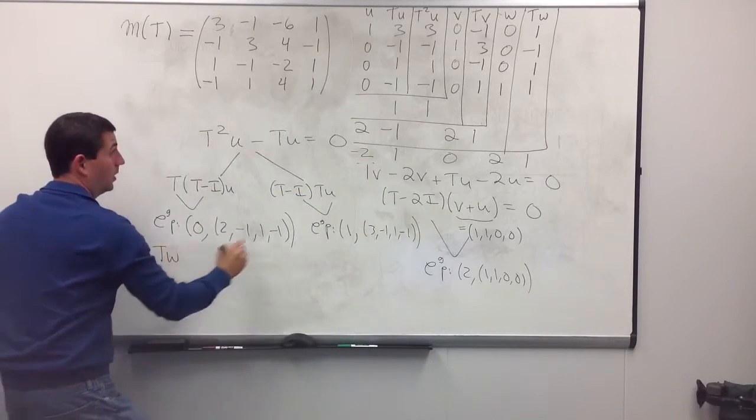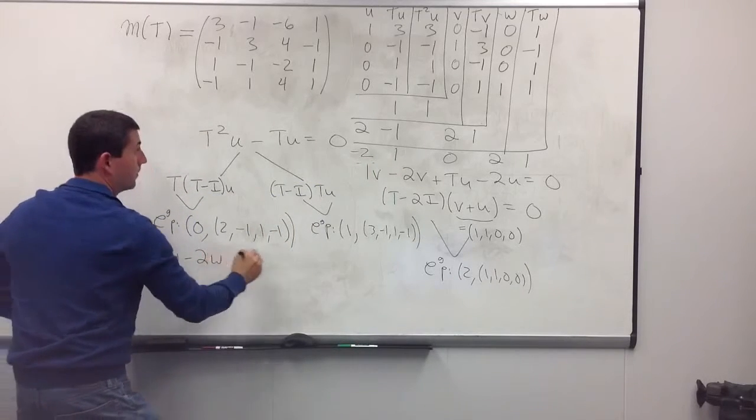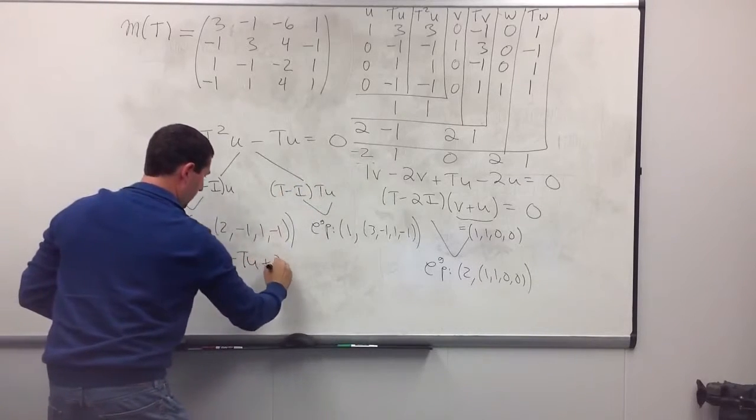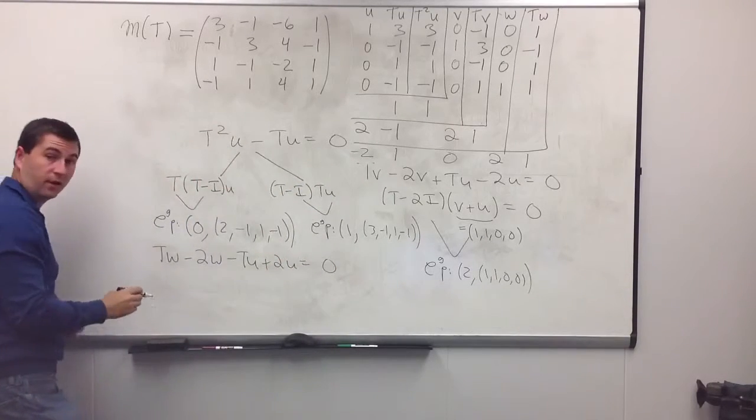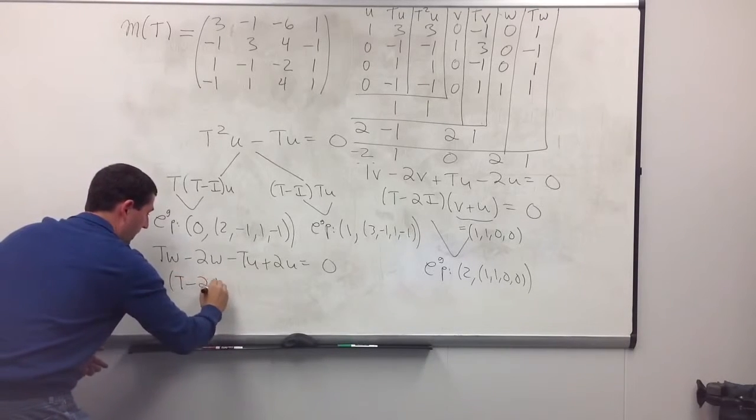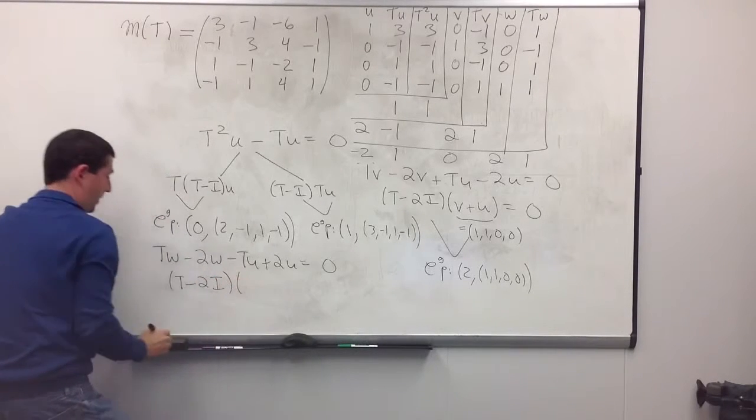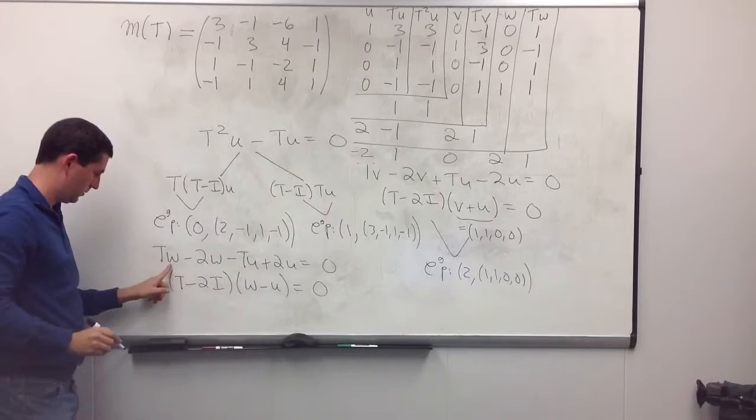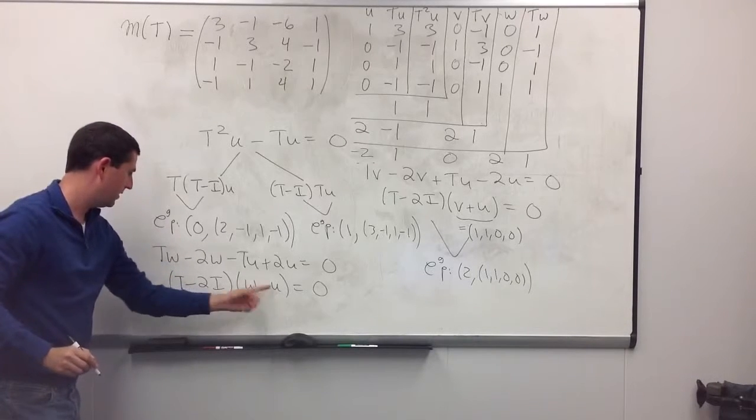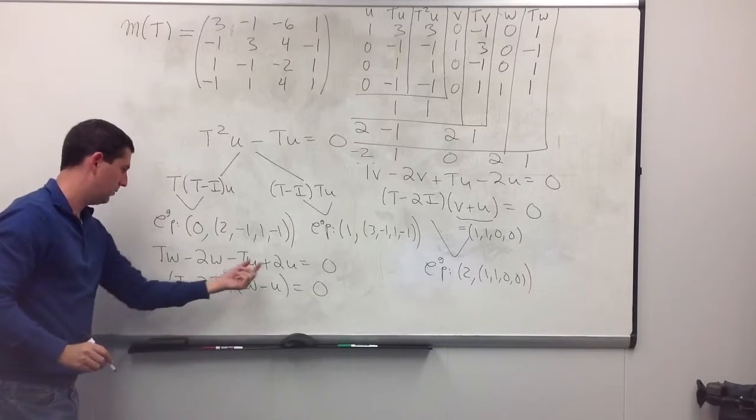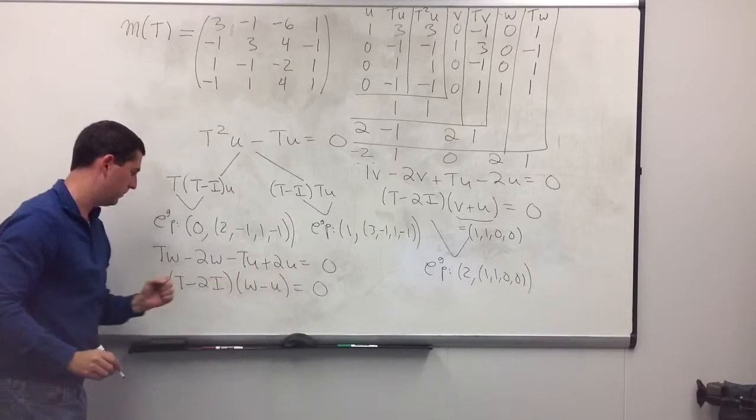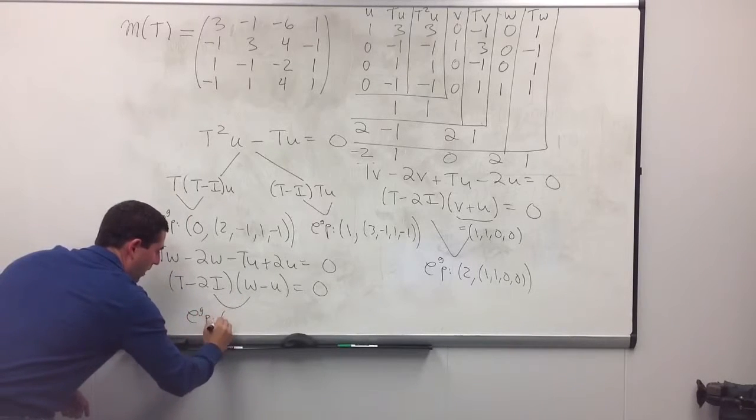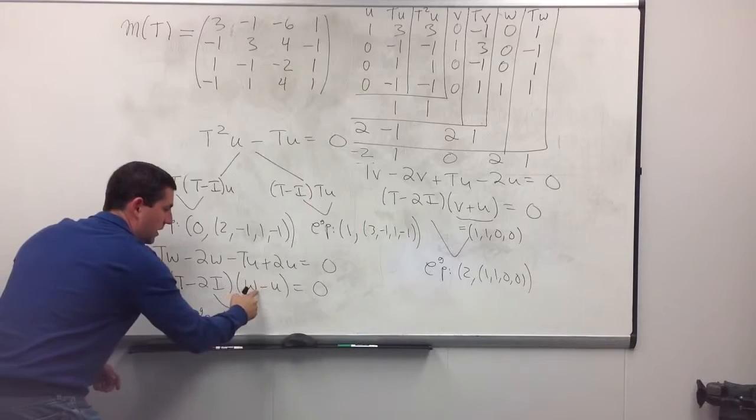So, that tells us that Tw minus 2w minus Tu plus 2u equals 0. And, using another clever factorization, (2 minus T)I, applied to w minus u equals 0. Let's check. Tw, T of minus u is minus Tu, minus 2w, and plus 2u. Beautiful. And, so, this tells us that we have an eigenpair. The eigenvalue is 2. And, the eigenvector is w minus u.